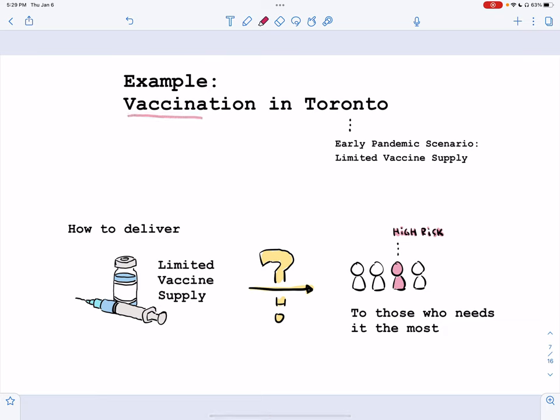We'll take vaccination in Toronto, which is the city I'm from, as an example. So this is during early pandemic, we had limited vaccine supplies, and we want to figure out how to deliver this limited vaccine supply to those who need it the most.